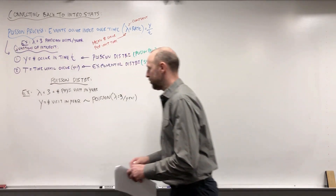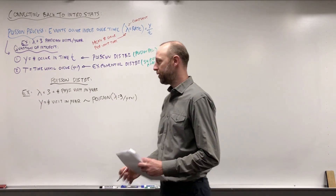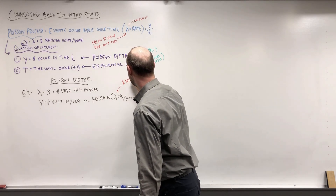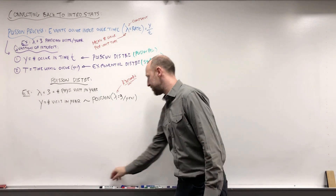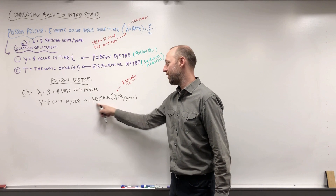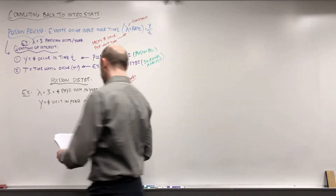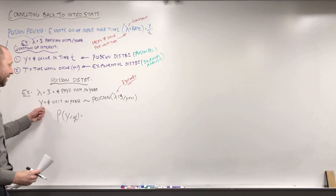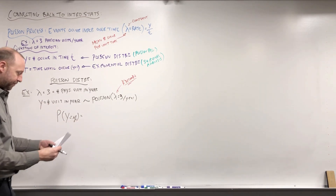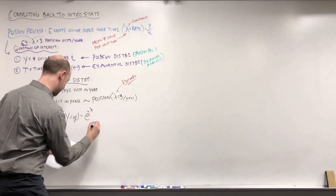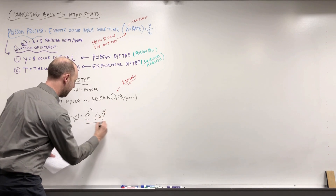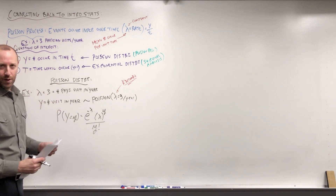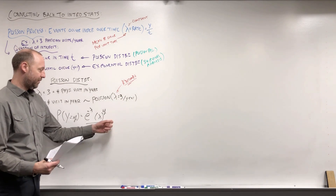In an intro stats or intro probability course, you learn about the Poisson probability distribution. We're living in this pretend world where we suppose we know the true rate at which events occur and that the number of visits follows a Poisson distribution. You learn to answer questions like: what's the probability that Y equals little y? What's the probability the number of visits in a year is 0, 1, or 2? You can work out E to the negative lambda times lambda to the power of Y over Y factorial. You answer questions like: what's the probability someone goes at least once in a year, or no more than four times?